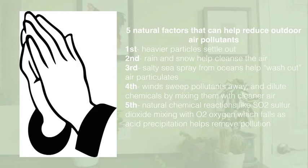There are five natural factors that can help reduce outdoor air pollutants. First, heavier particles settle out of the air due to gravity. Two, rain and snow help cleanse the air of pollutants. Three, salty sea spray from the oceans helps wash out particulates that flow from land to water. Four, wind sweeps pollutants away and dilutes chemicals by mixing them with cleaner air. And five, some pollutants are removed naturally by chemical reactions, like SO2 mixing with oxygen, which falls as acid precipitation.